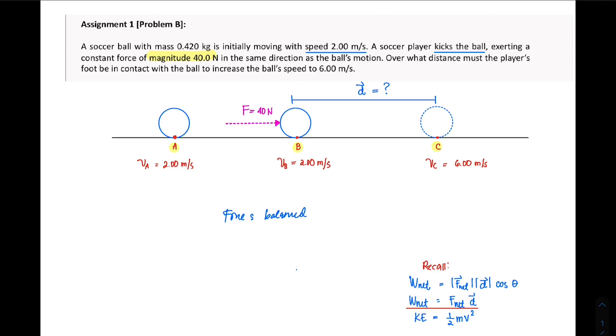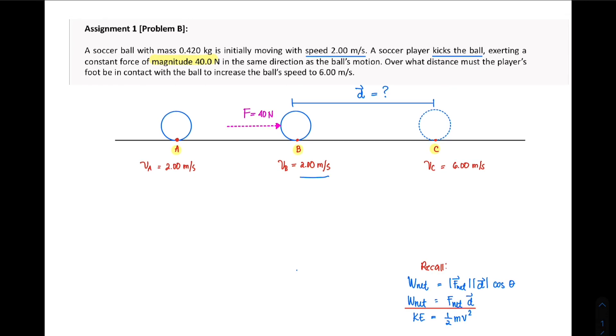The object will accelerate. That means from 2 meters per second at that point, you should expect it to go higher than that value. That is what you are seeing here - at point C it now has a velocity of 6 meters per second.